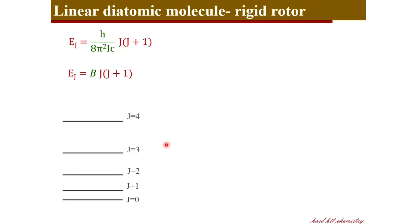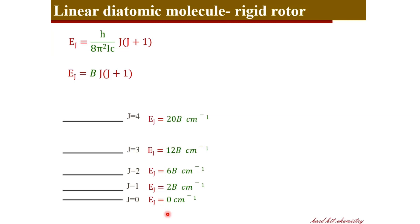For several J values we can calculate the energy: for J = 0, energy = 0; for J = 1, energy = 2B; then 6B, 12B, and so on. Now let us look at the quantum mechanical selection rules.